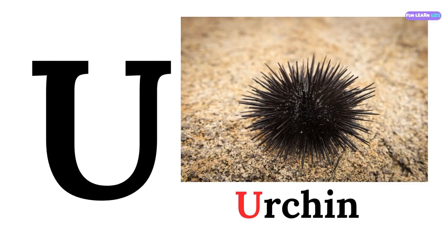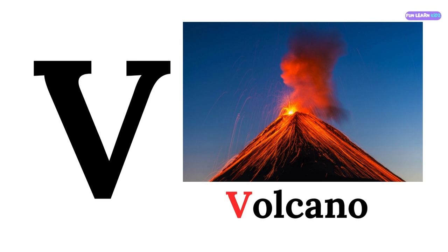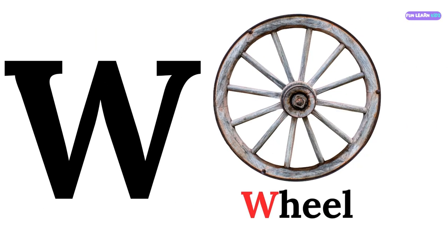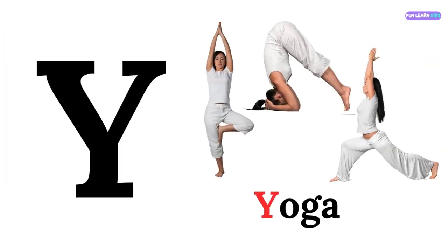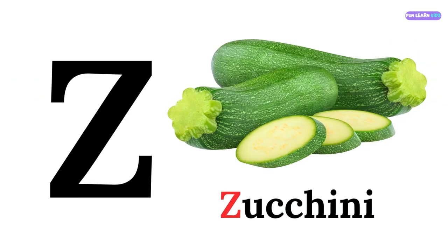U for urchin. V for volcano. W for queen. X for xylophone. Y for yoga. Z for zucchini.